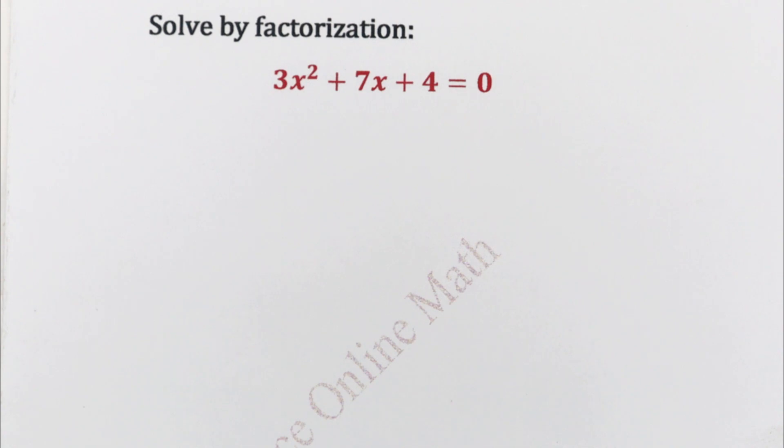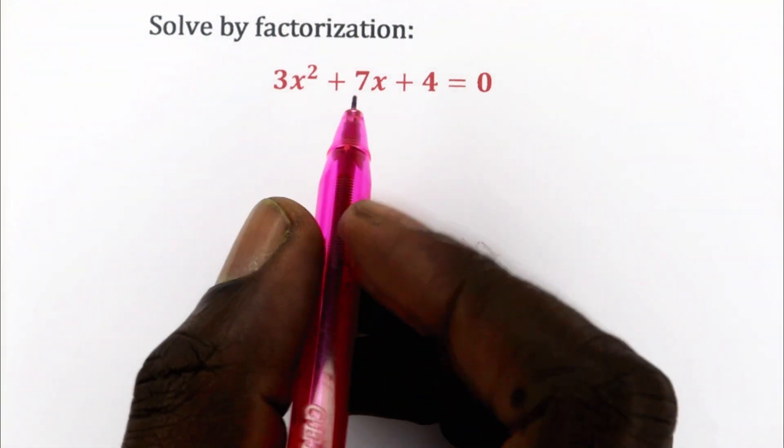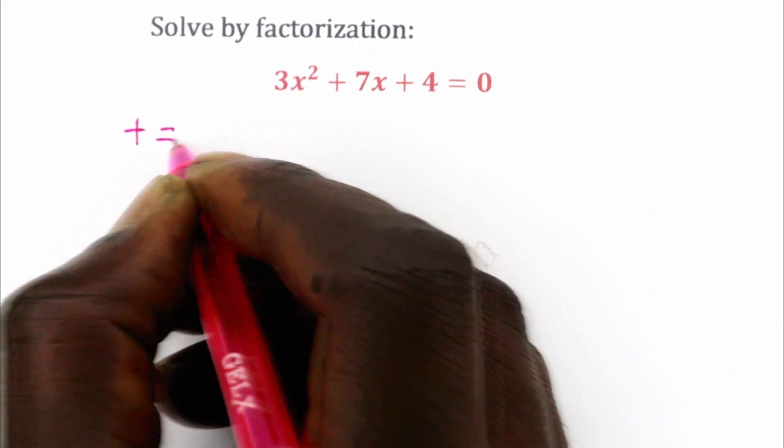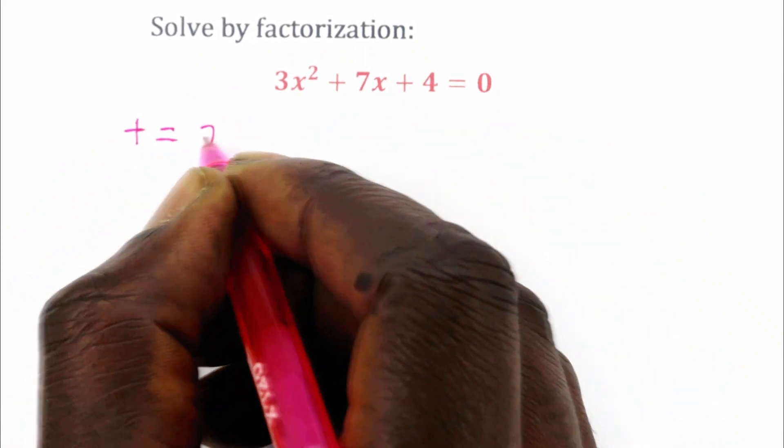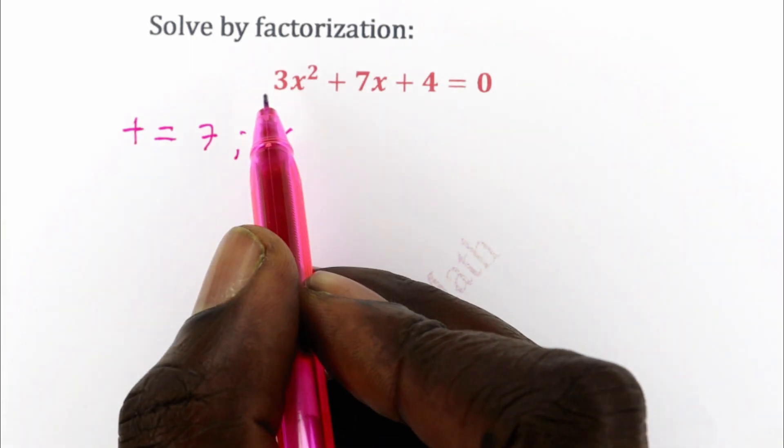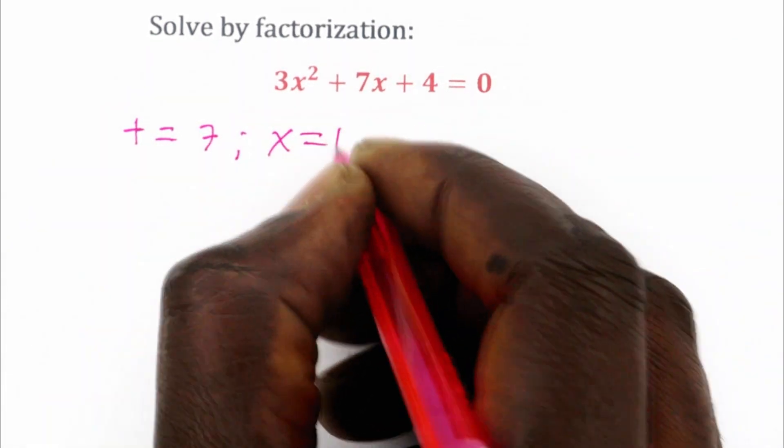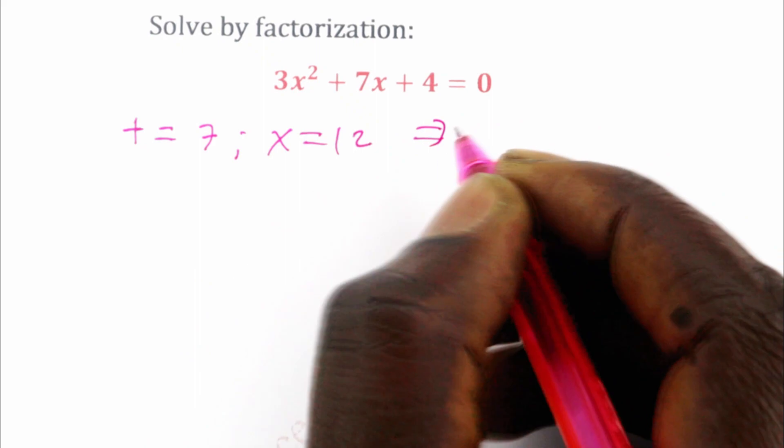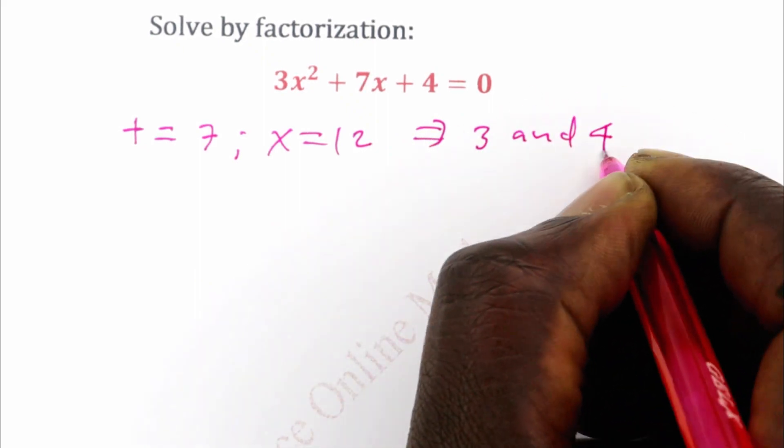So this is direct. And for you to use factorization, you have to look for two numbers whose sum is the same as b. In our case b is 7. And the product of those two numbers should be the same as a times c. That is 3 times 4, which is 12. So we will find that those two numbers are 3 and 4.